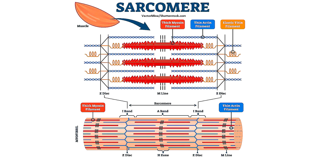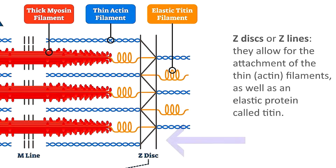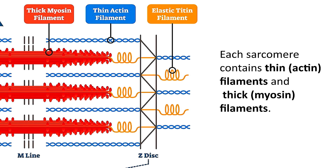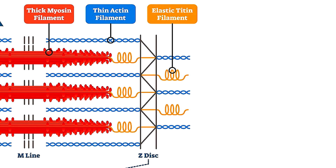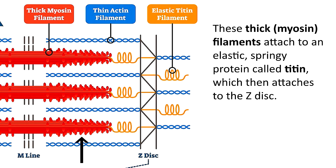As we take a closer look at the structure of a sarcomere, you'll notice these zigzag sections that mark the endpoint of each sarcomere. These are called z-discs or z-lines, and they allow for the attachment of the thin actin filaments as well as an elastic protein called titin. Each sarcomere contains thin actin filaments and thick myosin filaments. The thin actin filaments, represented here in blue, anchor to the z-disc. The thick myosin filaments, represented here in red, attach to an elastic springy protein called titin, which then attaches to the z-disc as well.